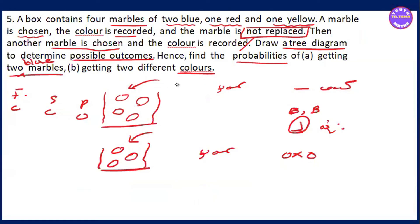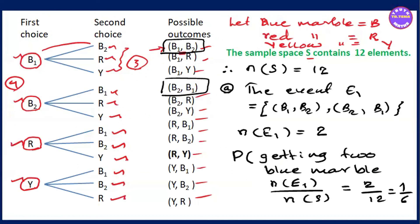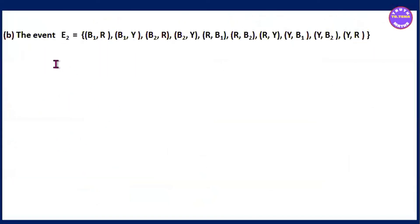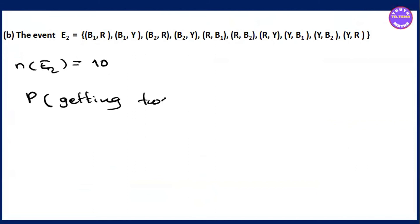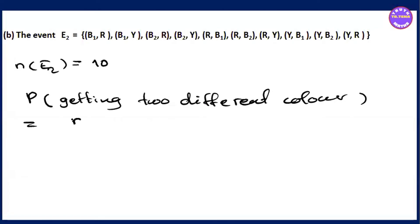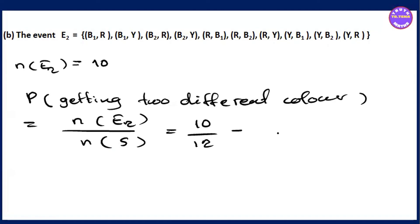Now we're talking about different colors. Event E2 is getting two different colors. The probability is P(E2) = n(E2) / n(S). n(E2) equals 10 and n(S) equals 12, so P(E2) = 10/12 = 5/6.